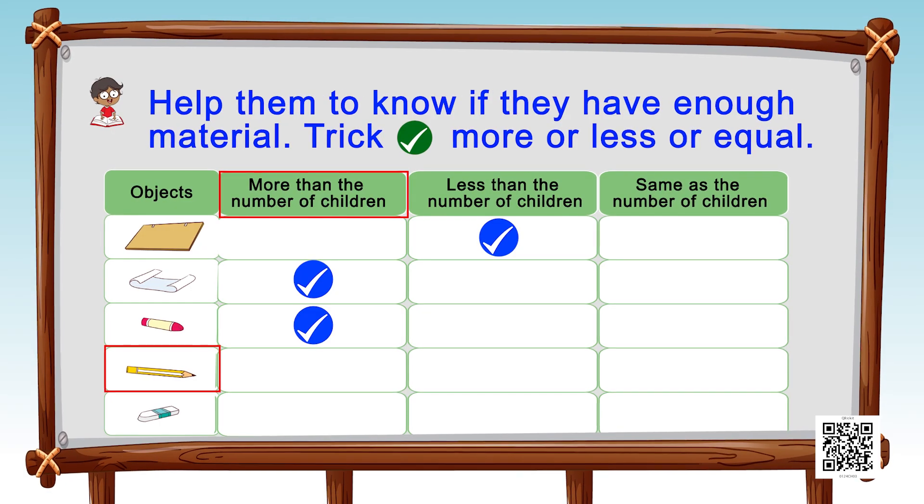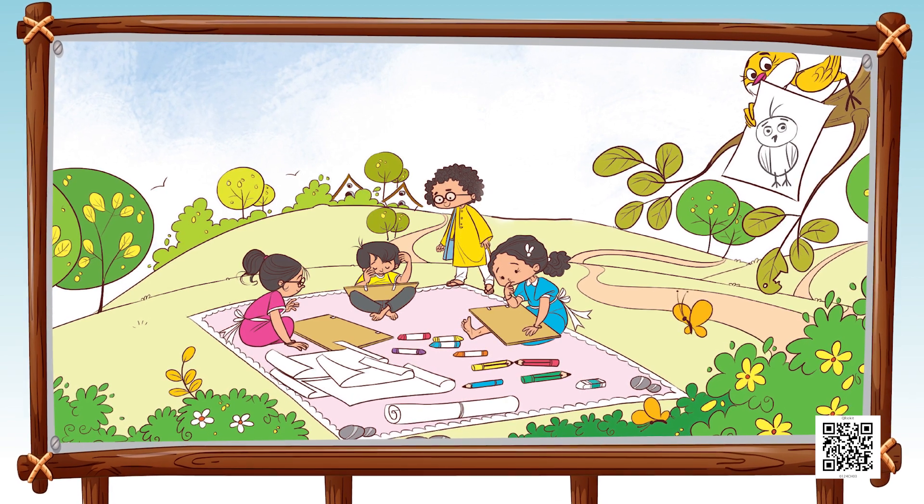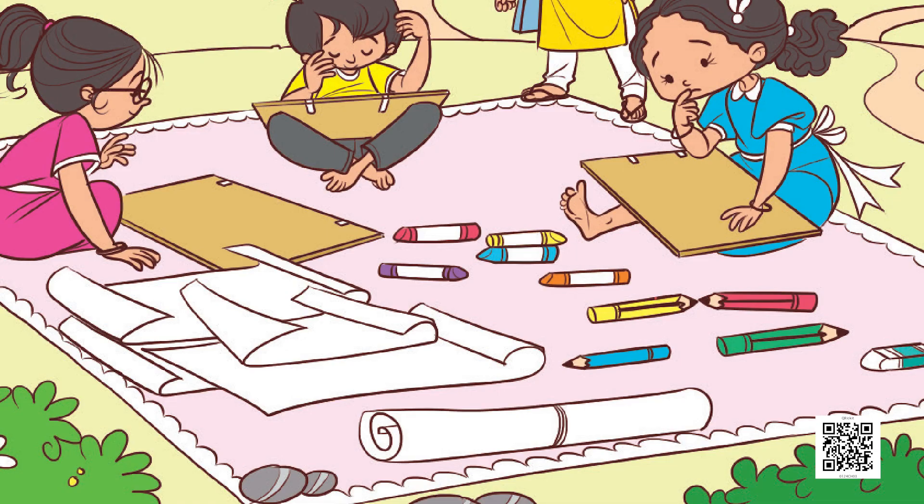Moving on to the next object — it is a pencil. Similarly, we have to count the number of pencils and put a tick if it's the same as, less than, or more than the number of children.